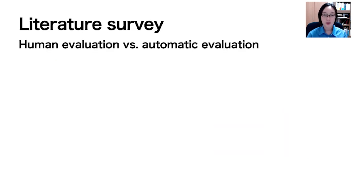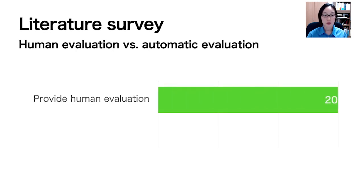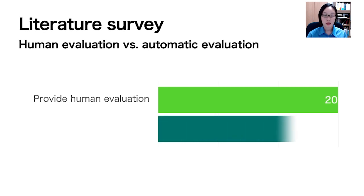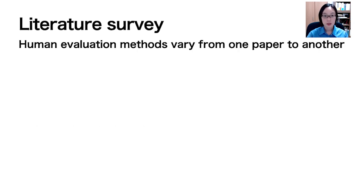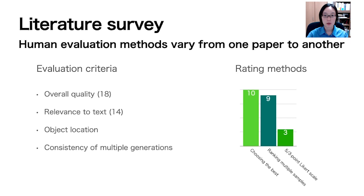Let's start by discussing a survey we conducted on 37 recent text-to-image research papers. Our findings revealed that only 20 out of the 37 papers included human evaluation, meaning that 17 of these works solely relied on automatic measures. Upon examining the 20 papers that incorporated human evaluation, we noticed that the evaluation methods varied significantly between papers. Unfortunately, none of these papers reported the quality of the collective human ratings, making it difficult to know the effective approach for conducting human evaluations.